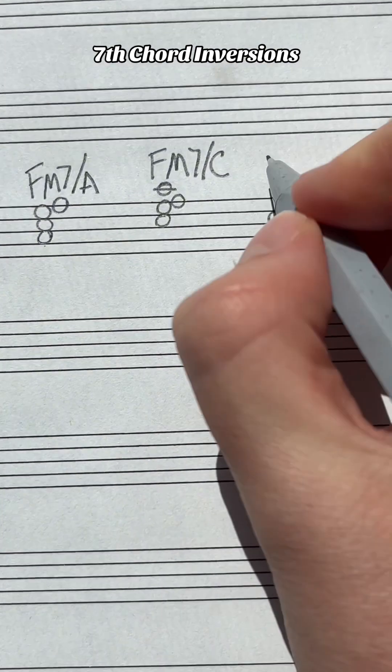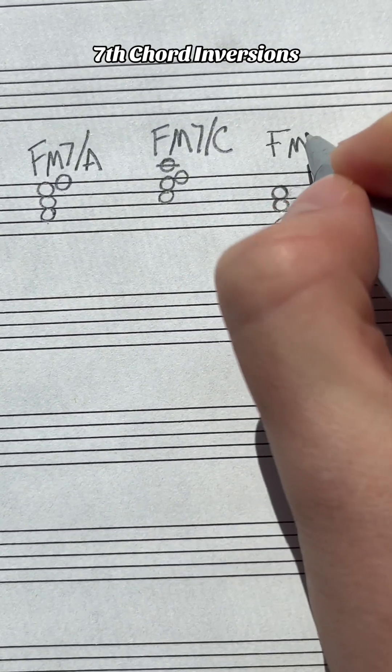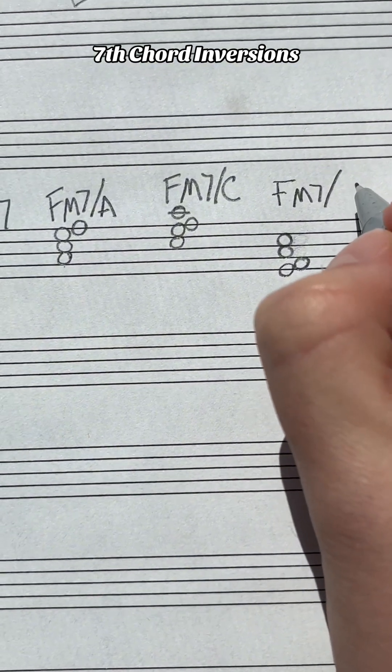The lowest note, or the bass note, is important with inversions. F major 7 over E.